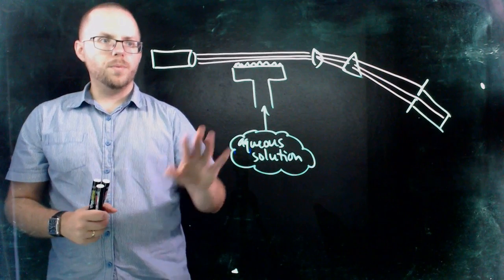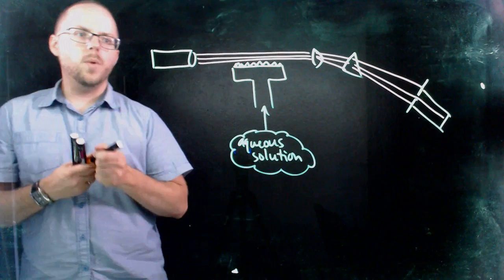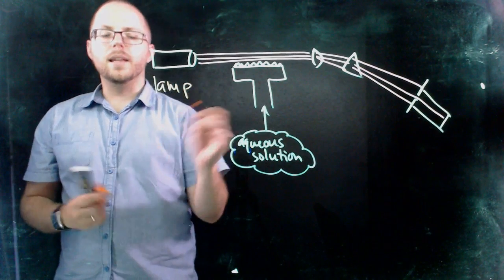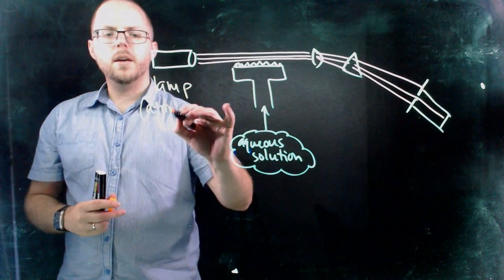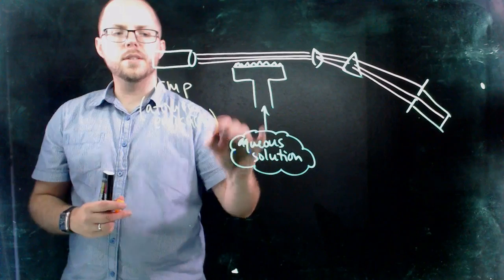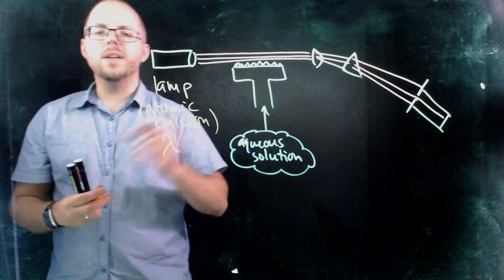So let's start from this side and work our way across. What we have over here is a lamp. It's a light source and it's called an atomic emission lamp. So what this is designed to do is it produces a particular wavelength of light.